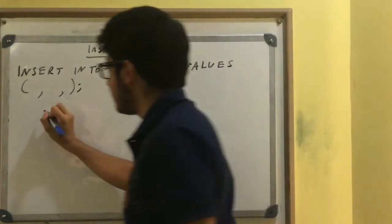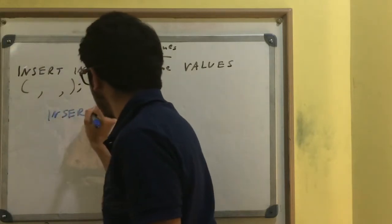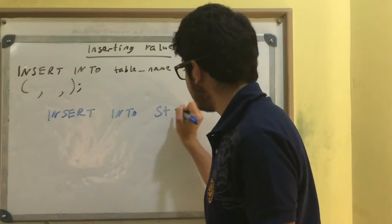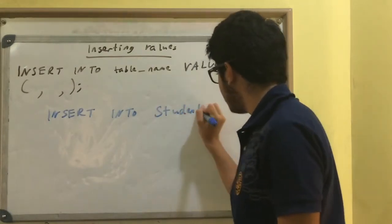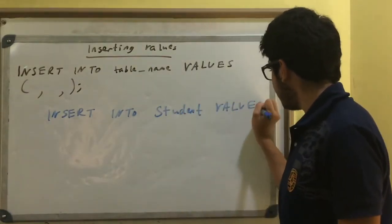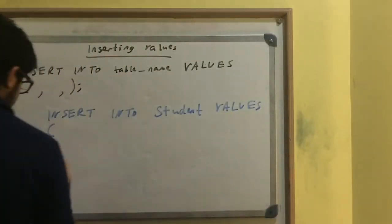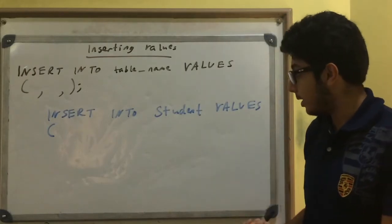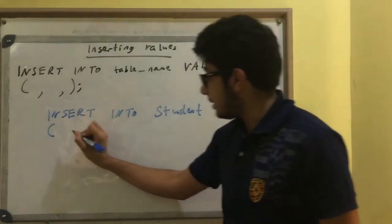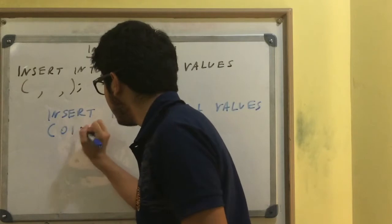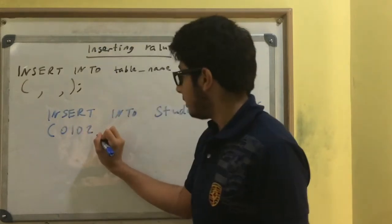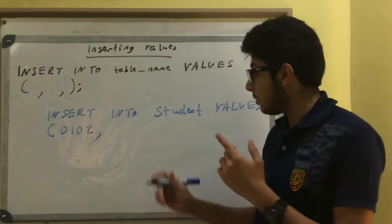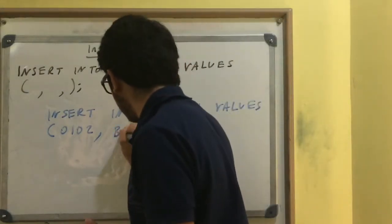So let's insert some values. INSERT INTO - remember the table I created had the name student - VALUES, open brackets. So the first field was student_ID, and this has to be primary key. So let's say 0102. Comma. The second field was a student name. So I'm going to say Bob.